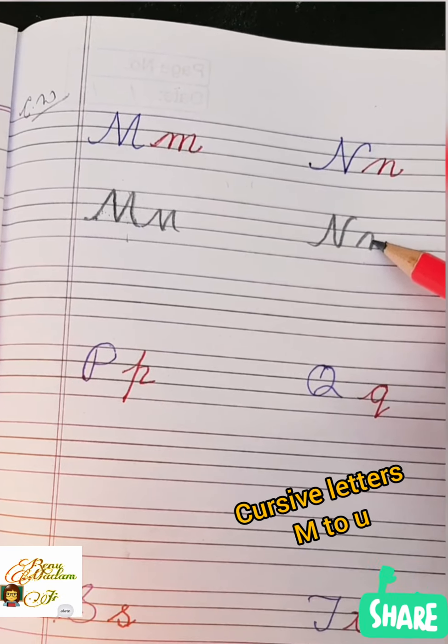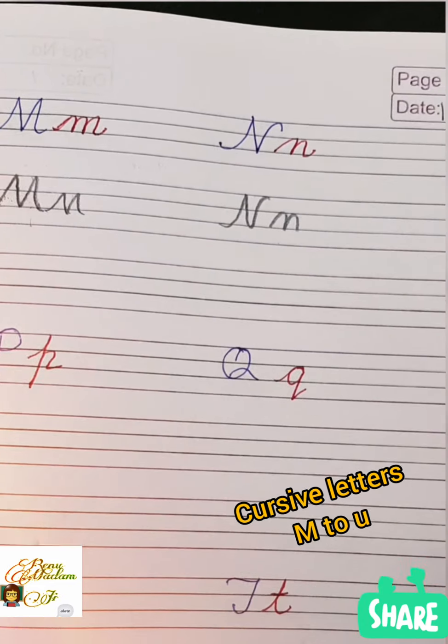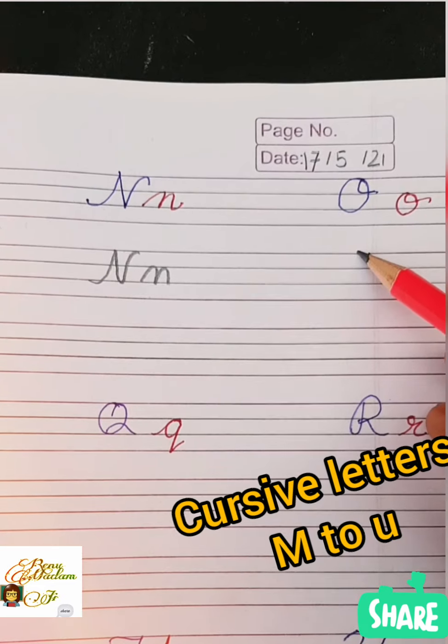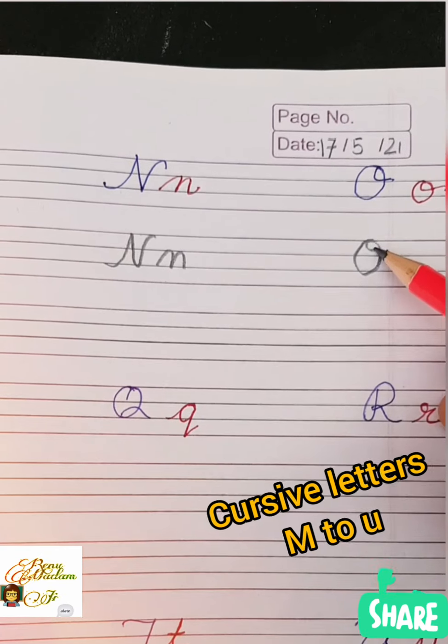O is very easy to write. You can write easily. This is our small O.